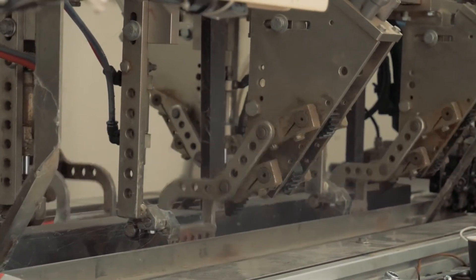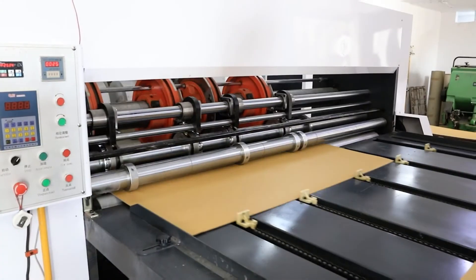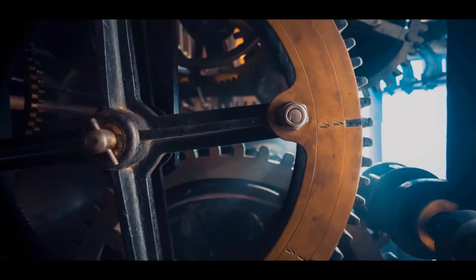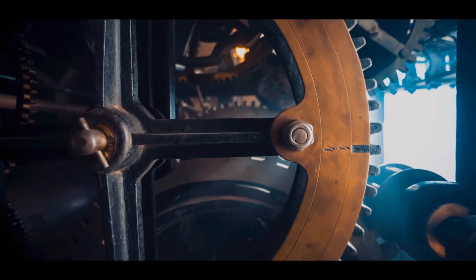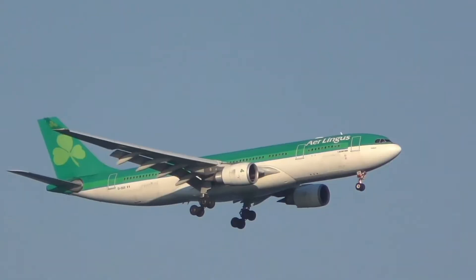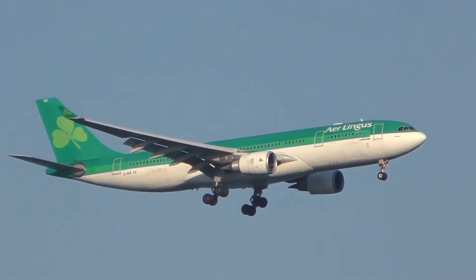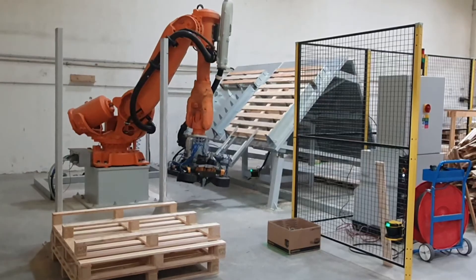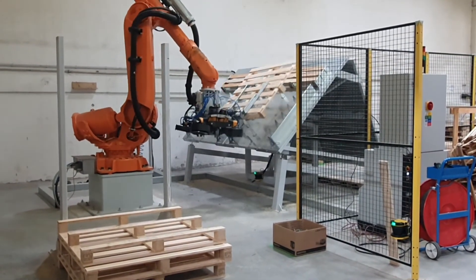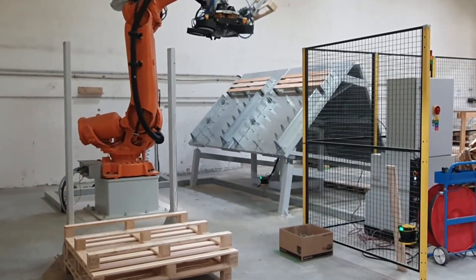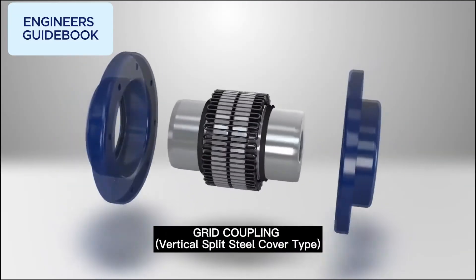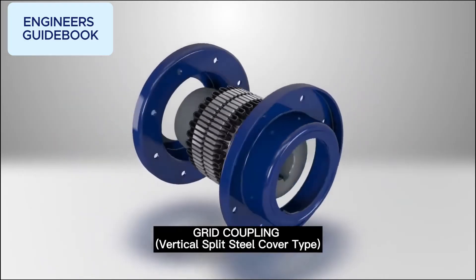Have you ever wondered what keeps the world's most powerful machines running smoothly? From the cars we drive, to the planes soaring across the skies, and even the robots building our future, there's a hidden mechanical element that is connecting it all together, which is known as mechanical couplings.